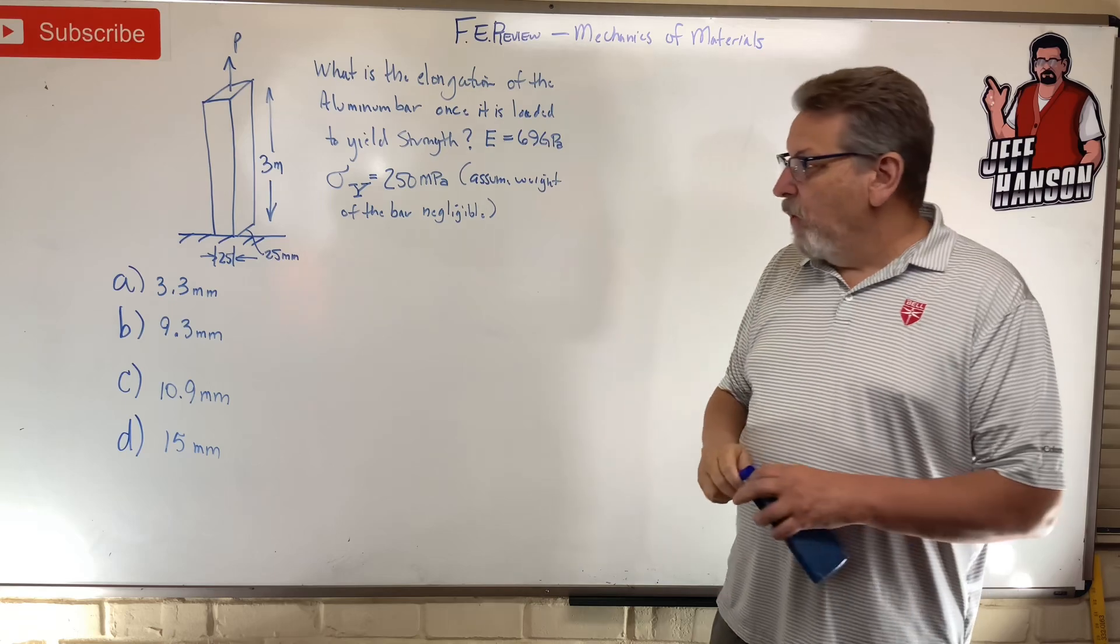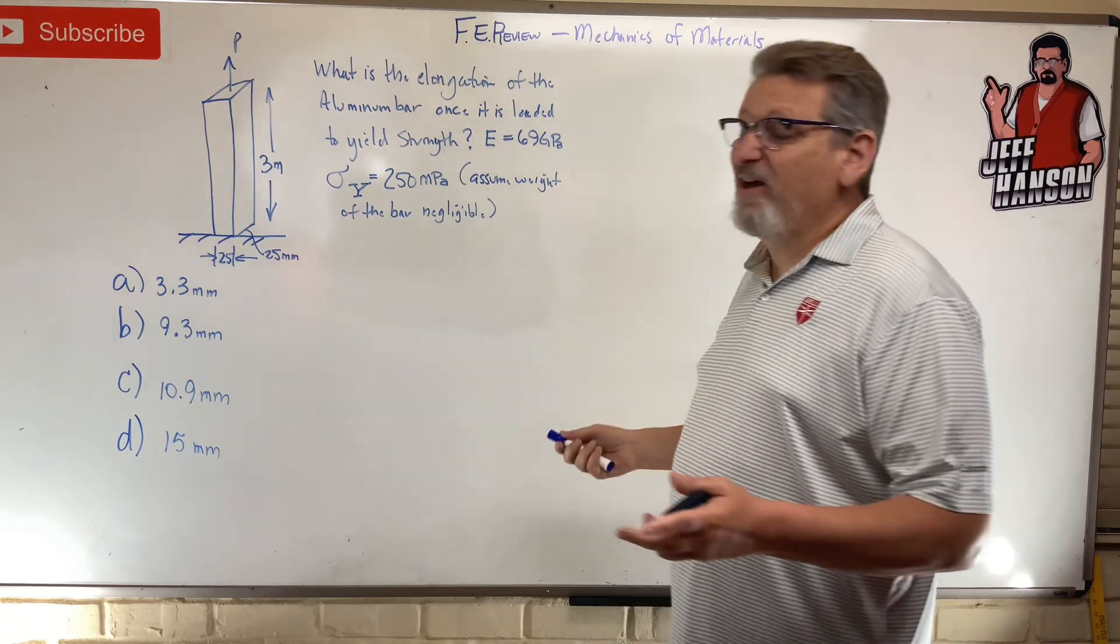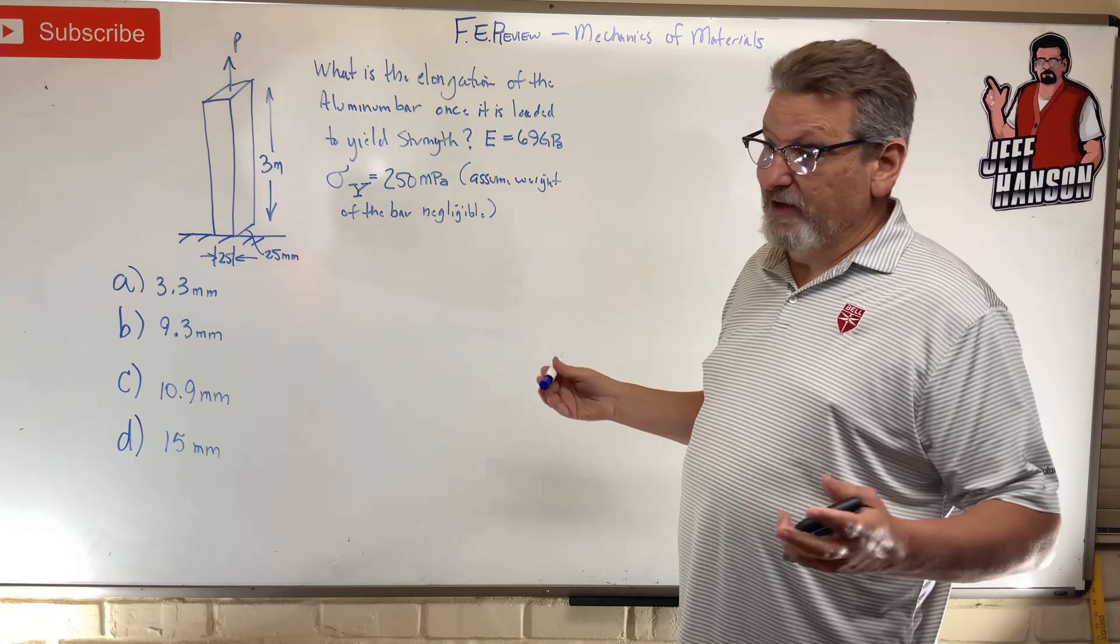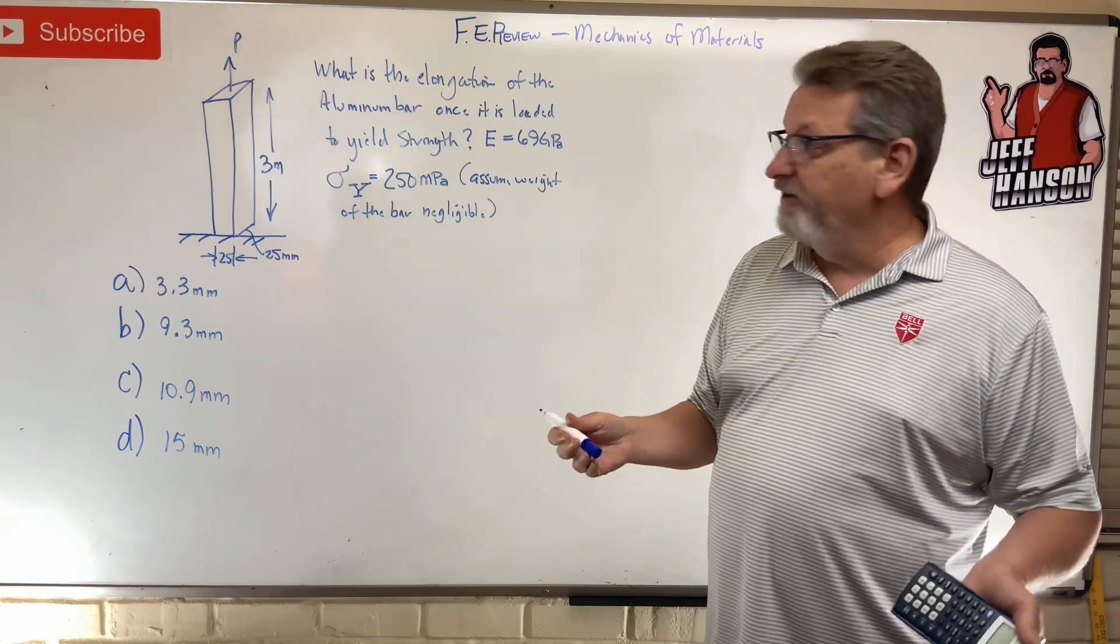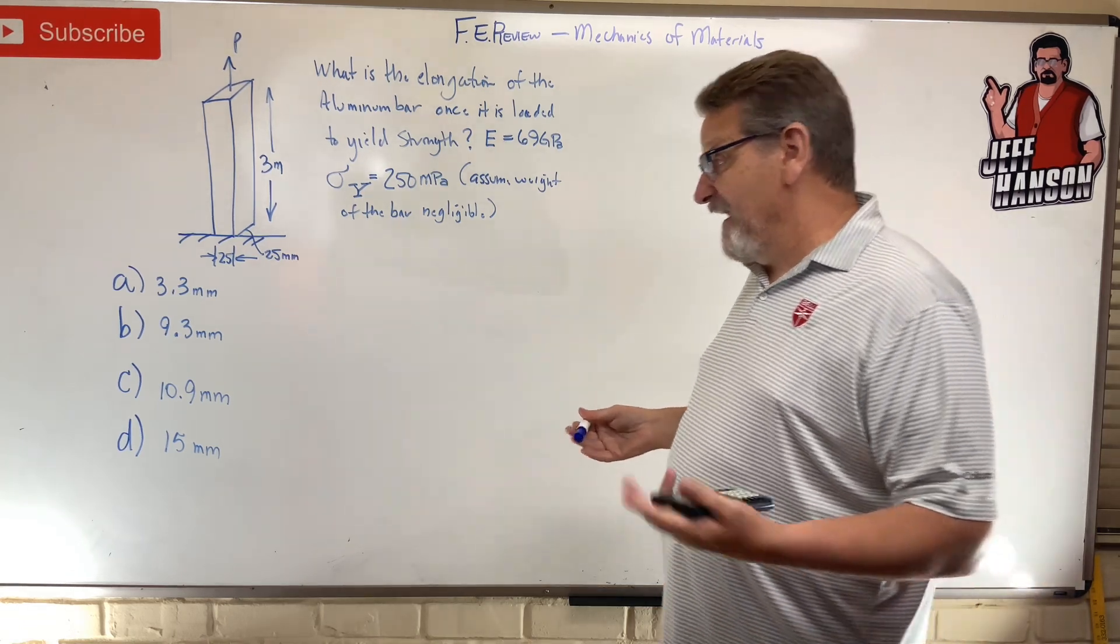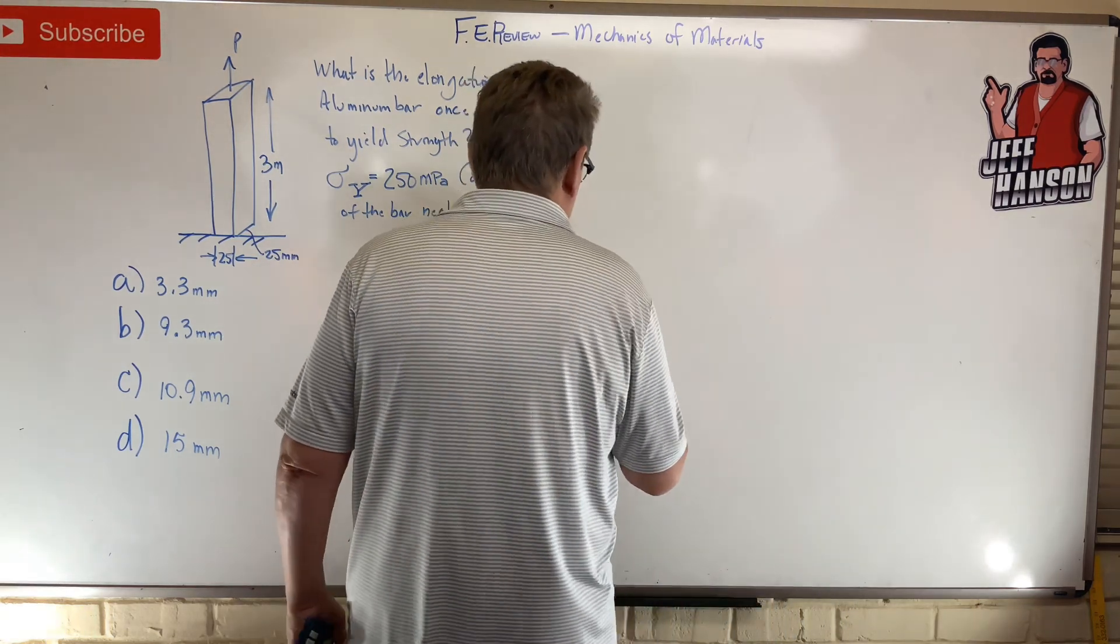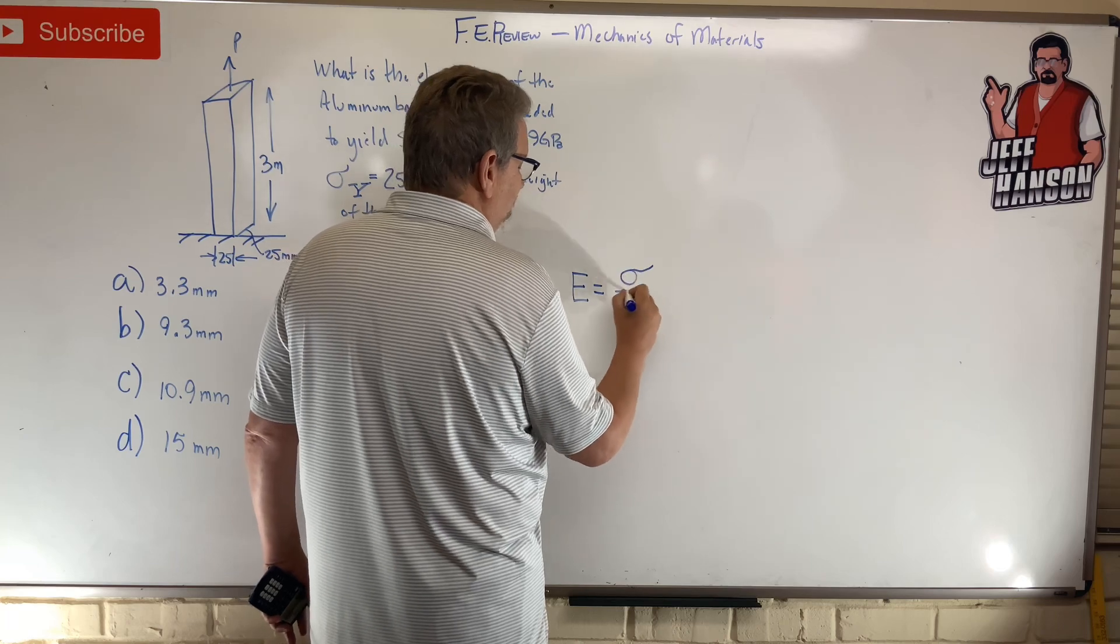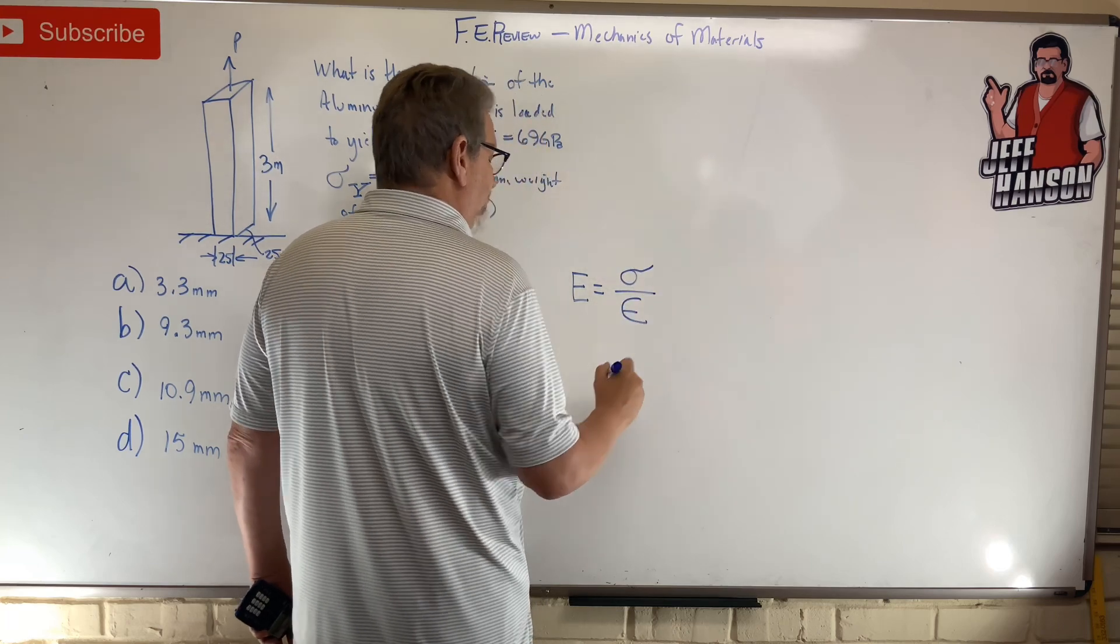All right, did you do it? Let's go. Now I don't have P, okay? So there's some methods that I could use, like PL over AE to find delta, but I don't have P so I can't use that equation. So the only one I can think of that I could use would be this guy: E is equal to rise over run.